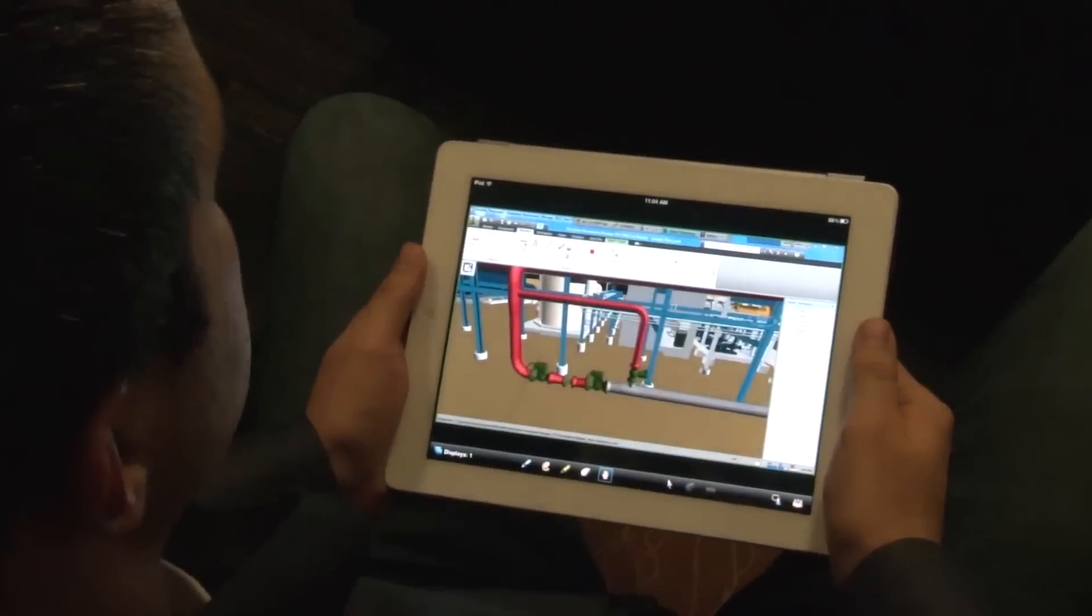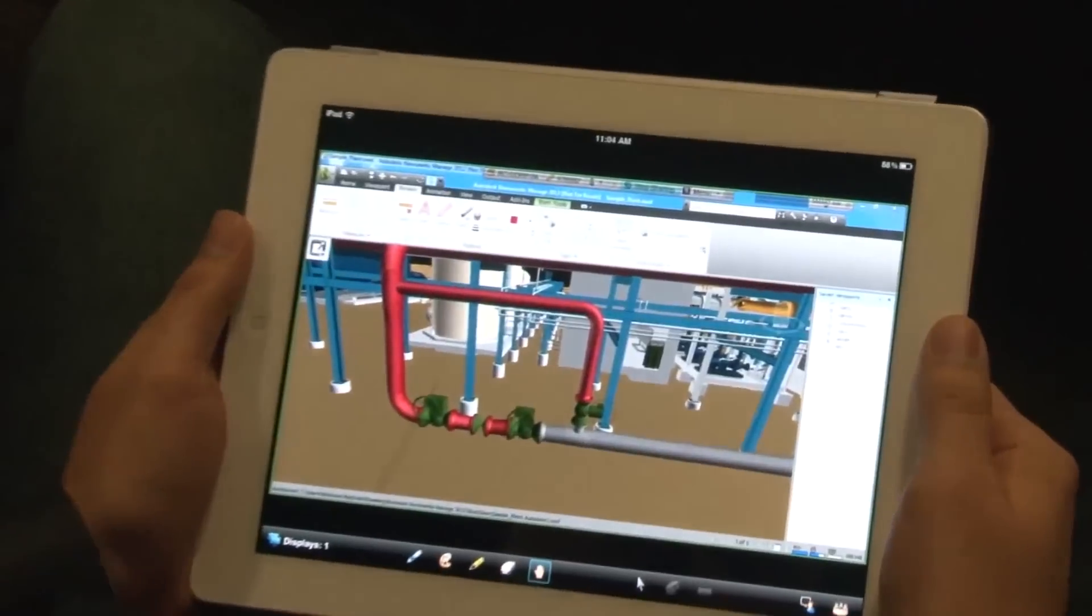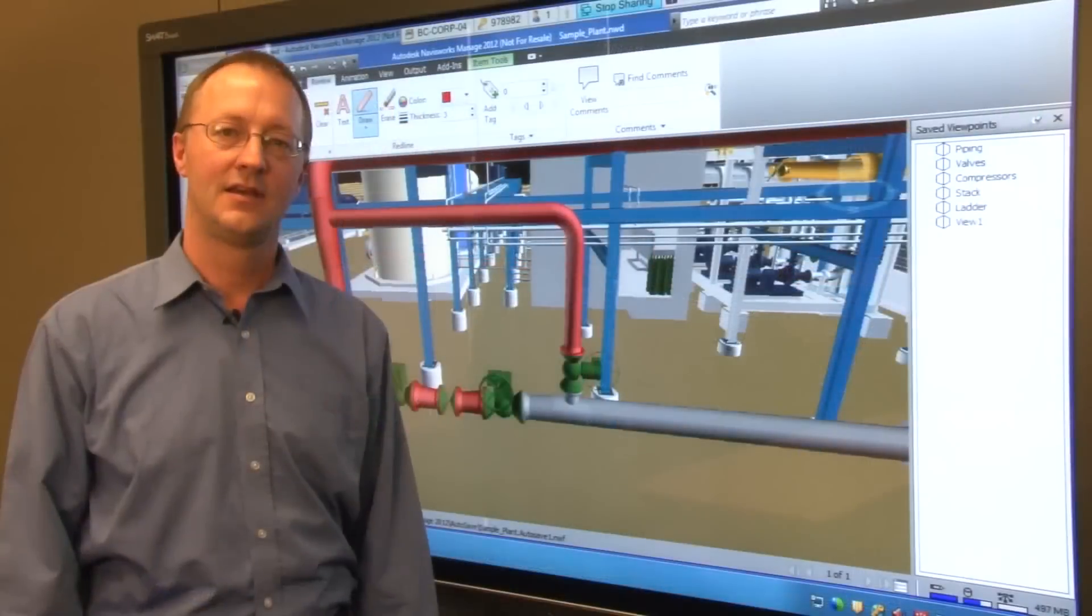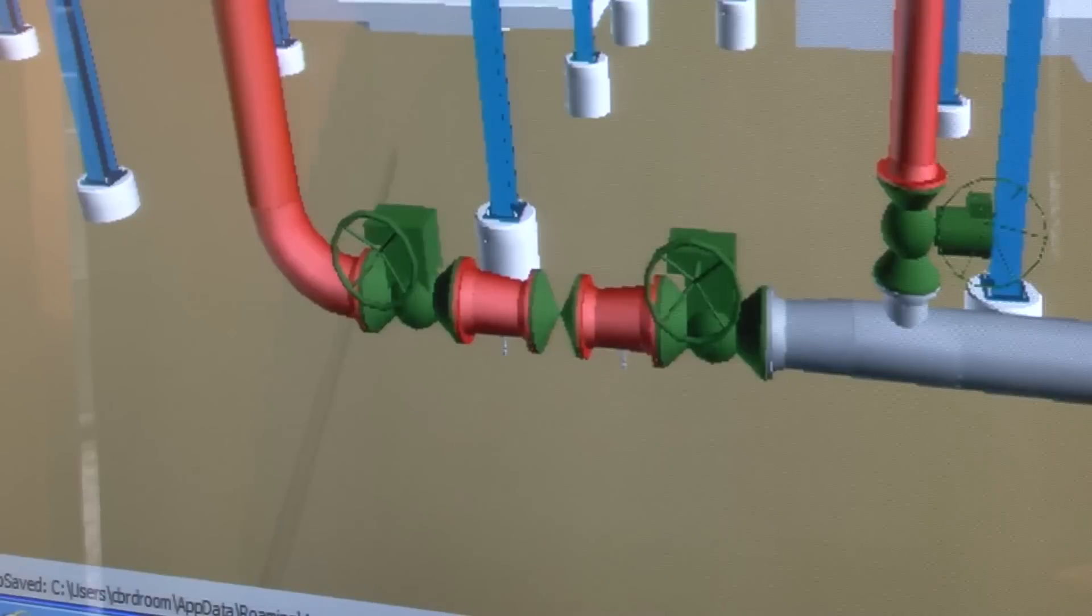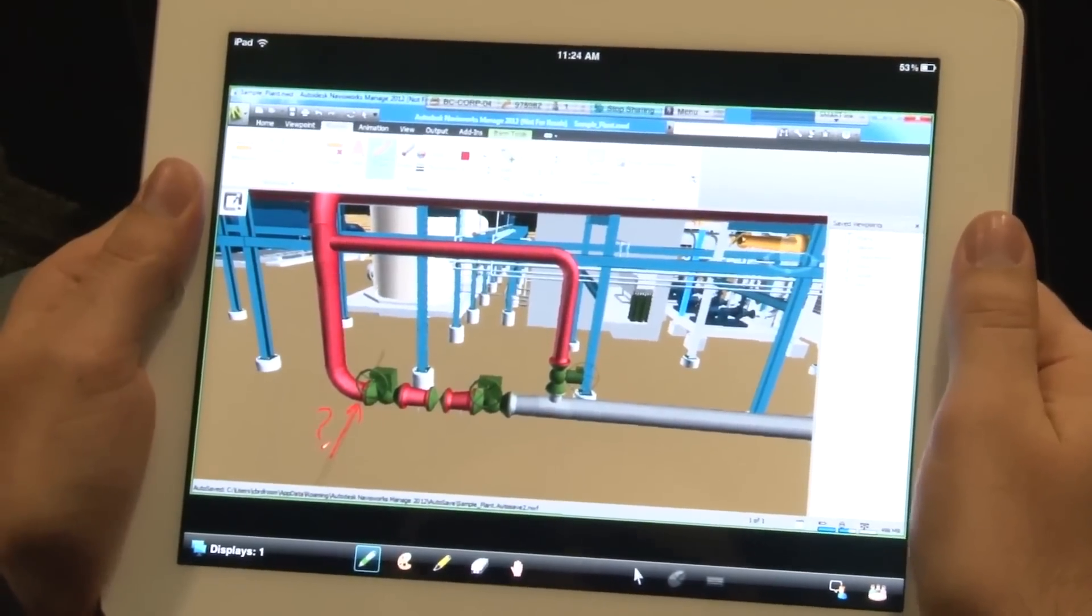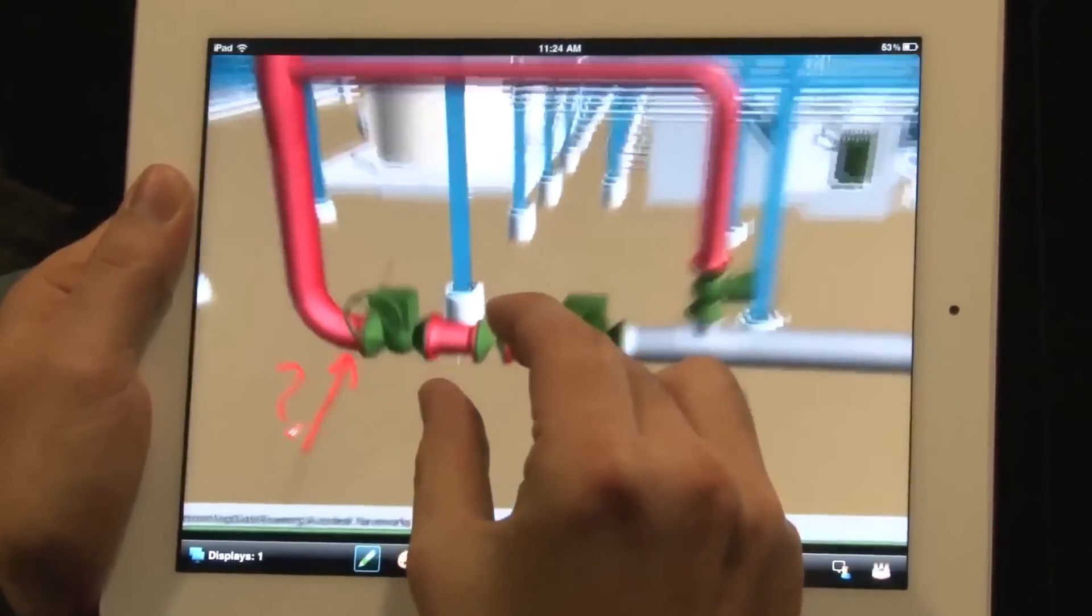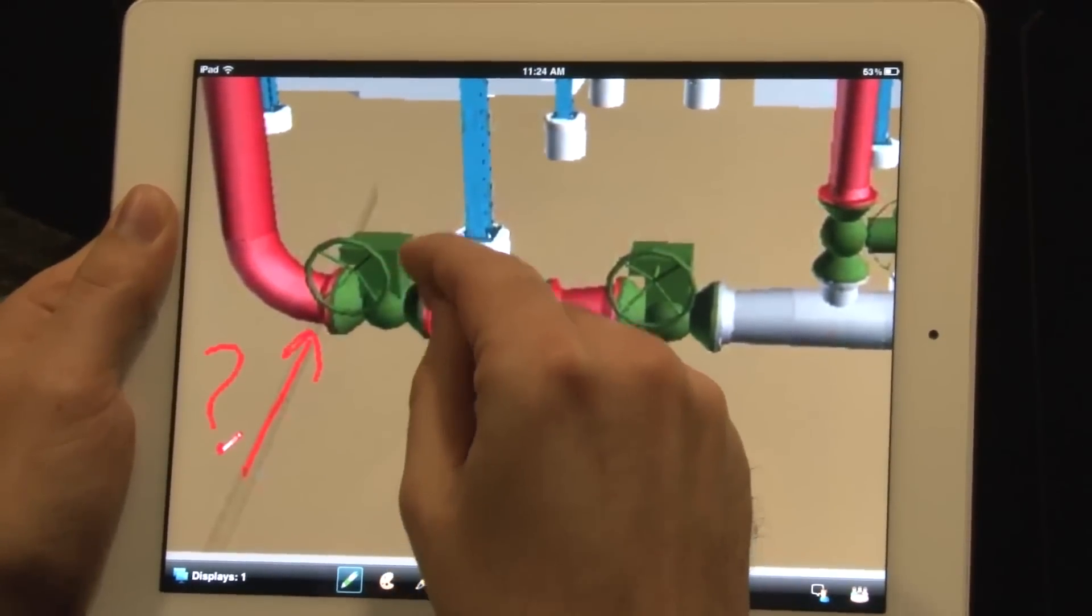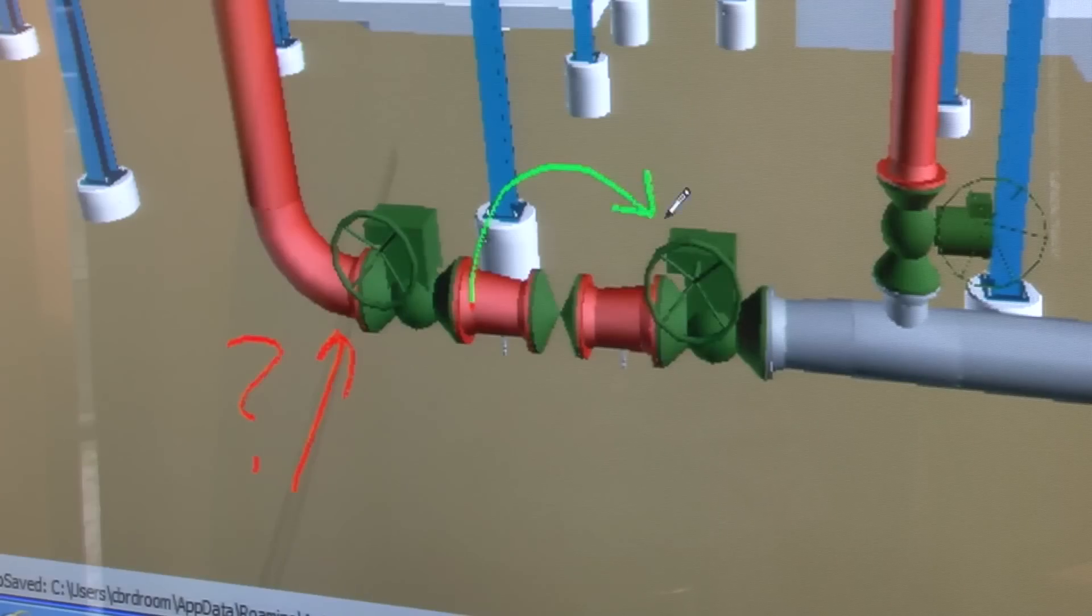Not only can remote participants see your screen, they can also add markups. Here we have a remote user running Bridget conferencing software on their iPad. The remote user can see the markups you are making and they can also remotely markup the view in Navisworks. The remote annotations appear as part of the saved Navisworks view just as if the remote user was standing beside you and marking up the model.